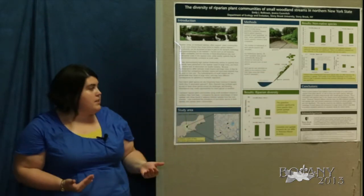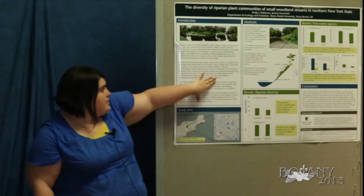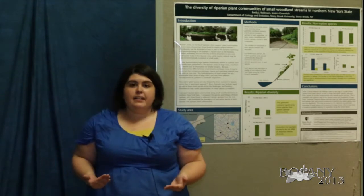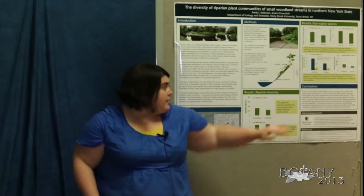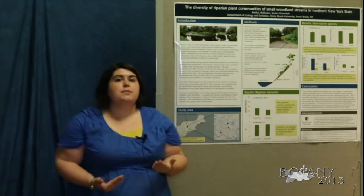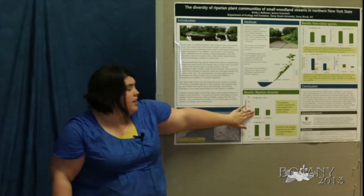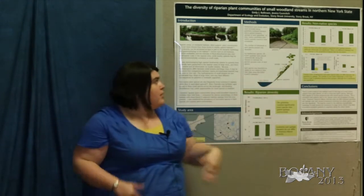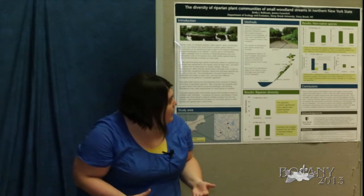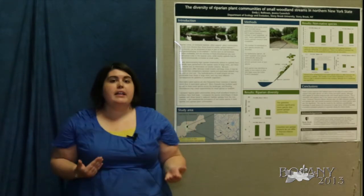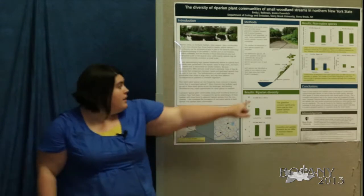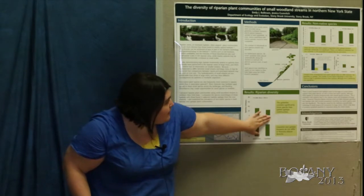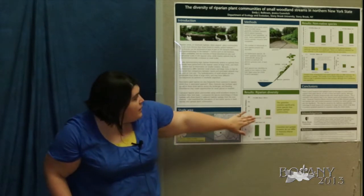Looking at the abundance of non-native species, I confirmed the same patterns seen in previous studies — there are more non-native species at the edge of the river than a meter up slope. But this seems to be driven by the fact that there's just a greater number of species overall at the edge of the river, because if I take into account the proportion of non-native species out of the total number of species, it's the same at both locations.